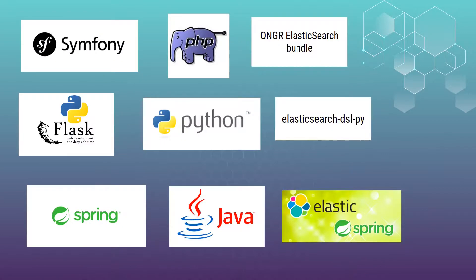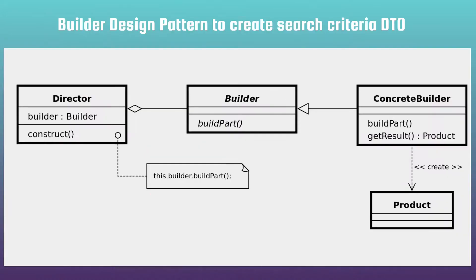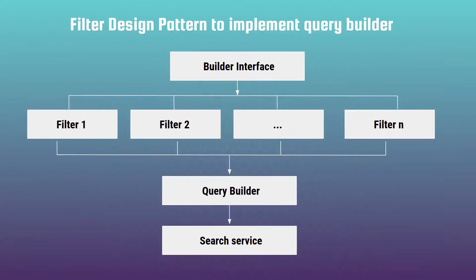In the fourth section I will show you real examples using PHP, Python, and Java libraries for integration with Elasticsearch. We will create a real microservice applying best programming practices and interesting design patterns like the builder pattern and filter pattern. I will also touch on the question of debugging possible problems.